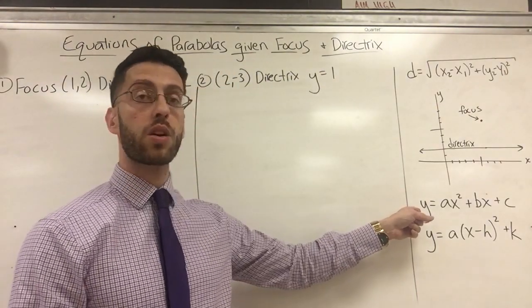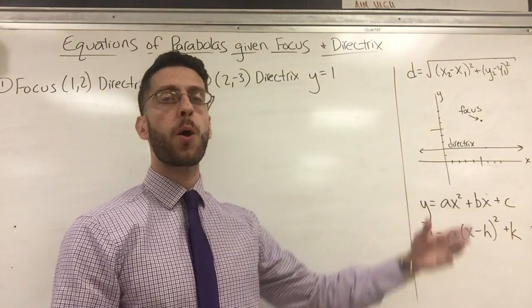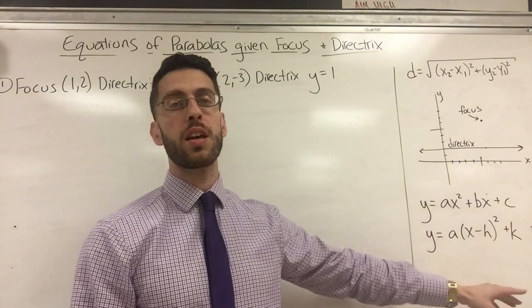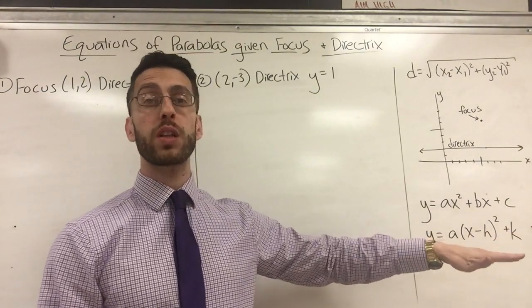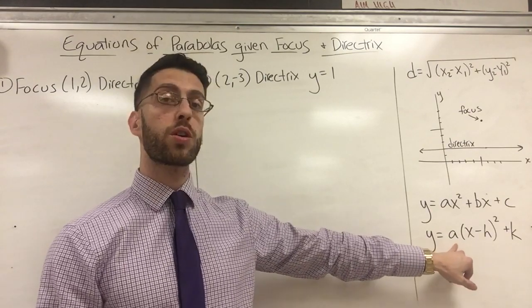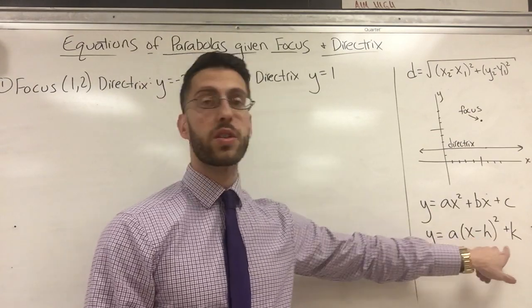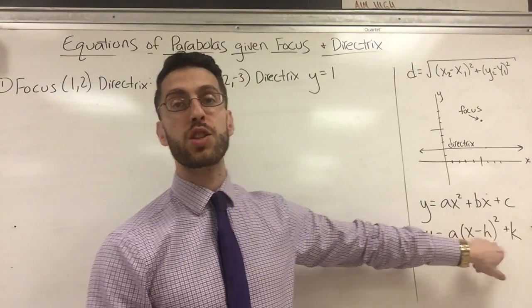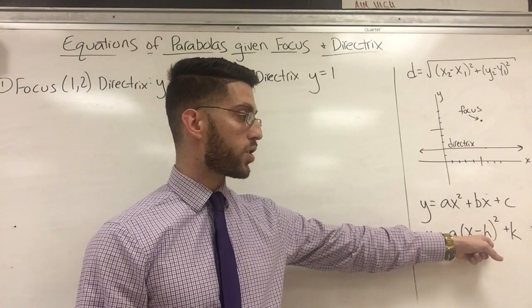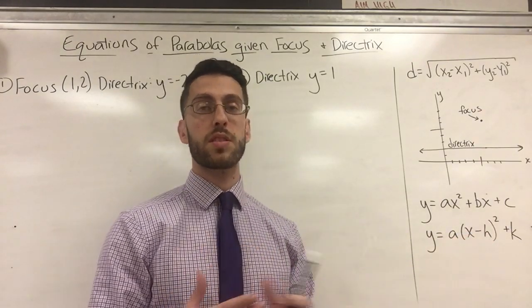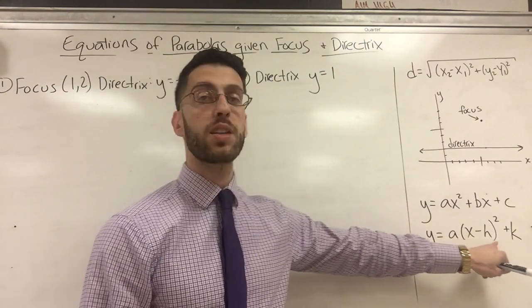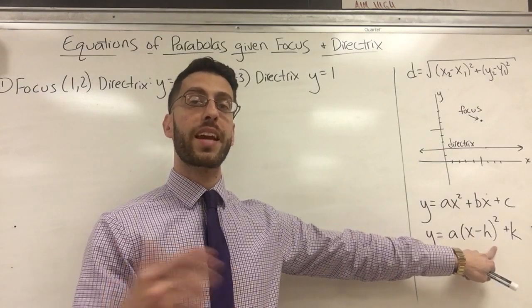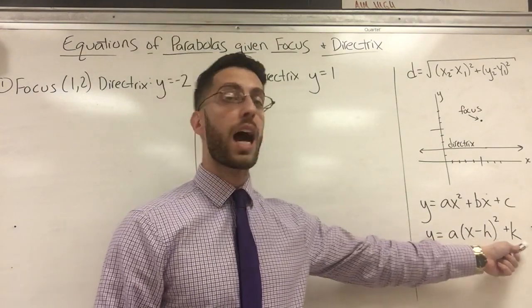The equation could either look like y = ax² + bx + c, or it could look like y = a(x − h)² + k. This second form is called vertex form, and it's slightly more useful because you can right away pick off what the vertex is. The vertex is (h, k), where h is the opposite sign of what you see inside — so if you see x − 2, h is positive 2; if you see x + 2, h is negative 2. Outside is exactly what you see.